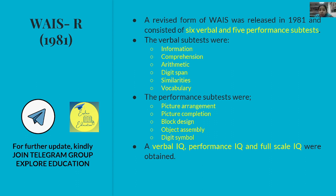The results of WAIS-R yield three scores: Verbal IQ from the verbal tests, Performance IQ from the performance tests, and Full Scale IQ. Verbal IQ plus Performance IQ equals Full Scale IQ. This is the structure of the 1981 revision.